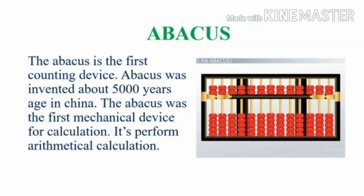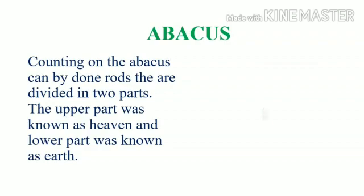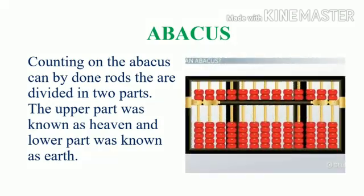The abacus performed arithmetical calculations, for example addition, subtraction, multiplication, and division. Counting on the abacus can be done using rods, which are divided into parts. The upper part was known as 'heaven' and the lower part was known as 'earth.'